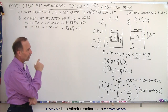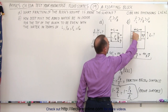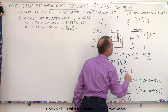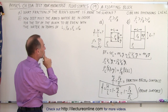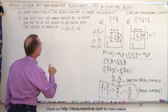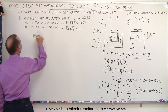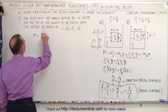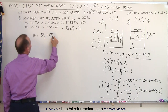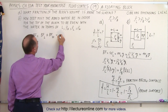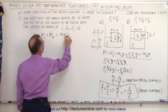For Part B, looking at this picture, the block is now buoyed up by both the water and the liquid with density sub L. We start again with the buoyancy force: the total buoyancy force equals the buoyancy force caused by the liquid plus the buoyancy force caused by the water, and that must equal the weight of the block — mg of the block.